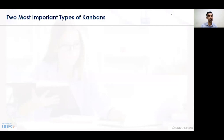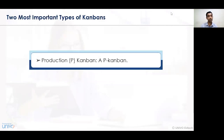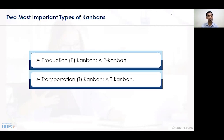The two most important types of Kanban are: first, Production Kanban (P Kanban), and second, Transportation Kanban (T Kanban). Production Kanban relates to production and manufacturing activity — covering raw material, quality of materials, process of materials, and movement of raw materials. Any activity undertaken at the production level for goods and services is called a P Kanban or Production Kanban. Transportation Kanban involves the movement of goods and services from one level to another, one machine to another, and one assembly line to another.